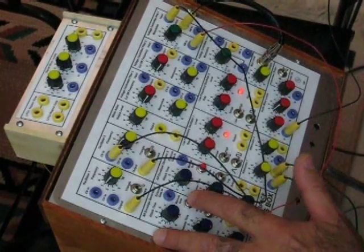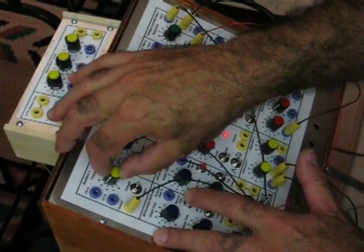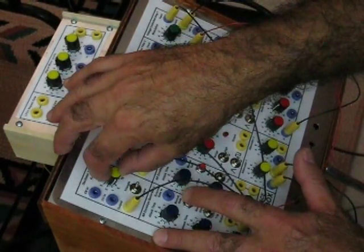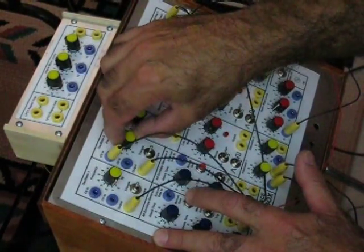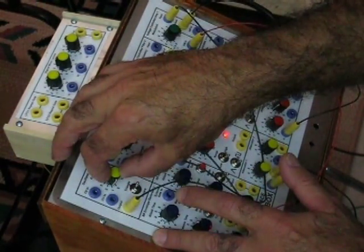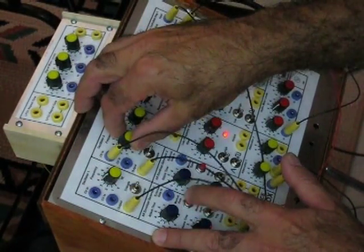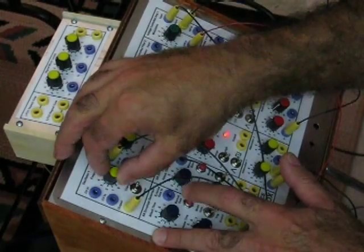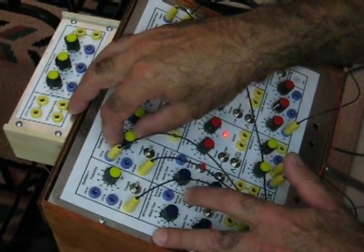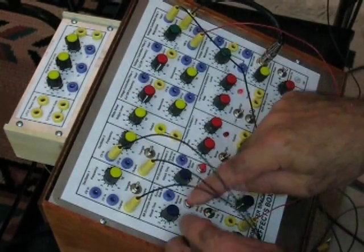And now that's with a square wave. Let's go to a triangle wave. See the difference? Very slow. Turn it up. And by mixing the various modulations, you can get some very cool bell type sounds.